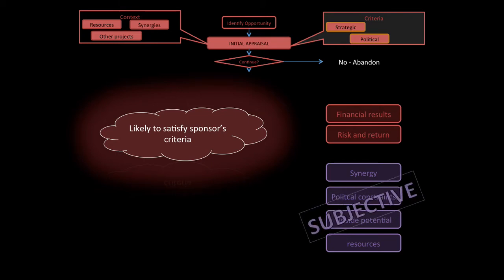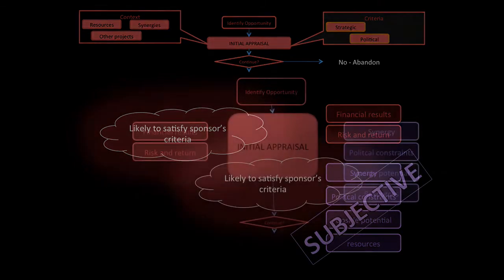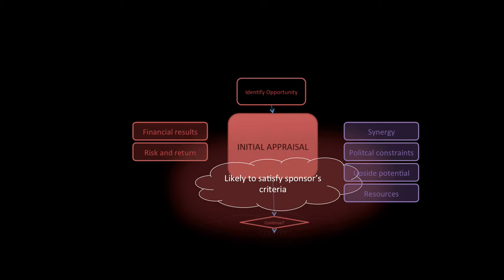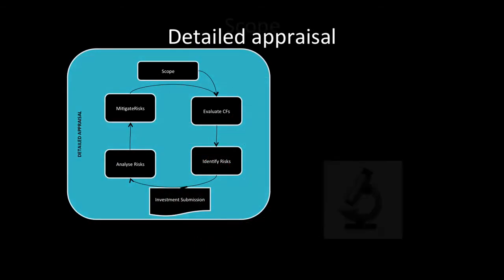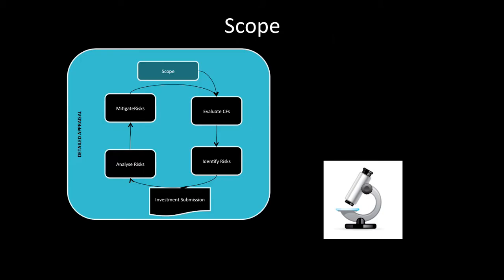However, the purple ones are subjective. That's just a nice little overview of the initial appraisal. Let's move on to the detailed appraisal and let's go into the scope. Scope is when you have a detailed definition of the project and it specifies the criteria, the time scale, the budget, the responsibilities, and the issues that they're not responsible for. Important to know that for the scope.